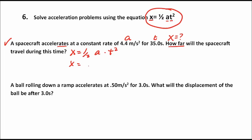Next, plug in the numbers with proper units. We write one-half times 4.4 meters per second squared, multiplied by the time squared — the time is 35.0 seconds, so we put that in parentheses and square it. Square 35 first, then multiply by 4.4, and then divide by 2 — or multiply by 0.5 — to find half of that answer.